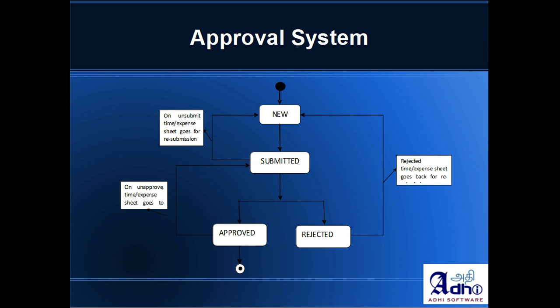Let's talk about the approval system. The approval system is optional and can be configured through the configuration page. Whenever a timesheet or expense sheet gets saved into the database, it gets into the new state. When it's submitted, it gets the submitted state. The submitter or the approver can do an unsubmit, which will take it back to the new state.